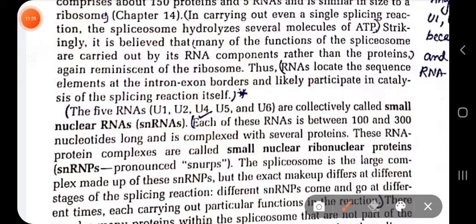We will not discuss all 150 different types of proteins in detail, but we will discuss the five small nuclear RNAs found within the spliceosome complex, since they mainly carry out the splicing process. These five small RNAs are termed U1, U2, U4, U5, and U6. Together they are called small nuclear RNA, or snRNA.